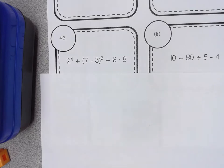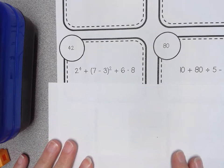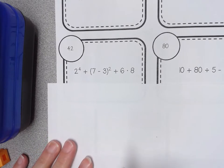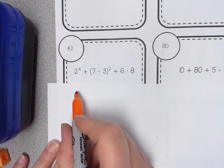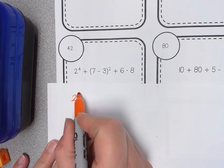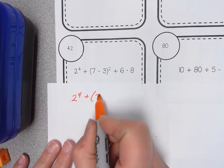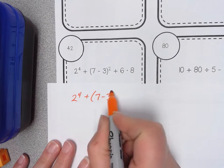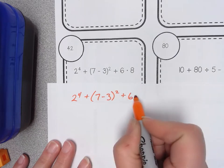Here's an example of an order of operations problem involving integers that you might find as you work through some of our activities in chapter 2. So I'm looking at this first problem which says 2 to the 4th plus the quantity of 7 minus 3 squared plus 6 times 8.